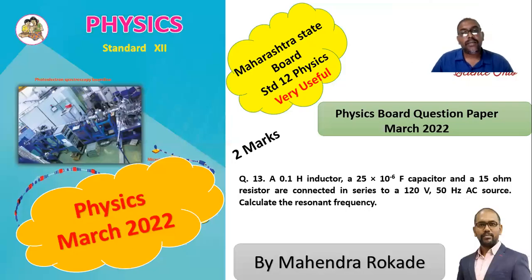This is a question from the March 2022 examination. A 0.1 henry inductor, a 25 × 10⁻⁶ farad capacitor, and a 15 ohm resistor are connected in series to a 120 volt, 50 hertz AC source. Calculate the resonance frequency.